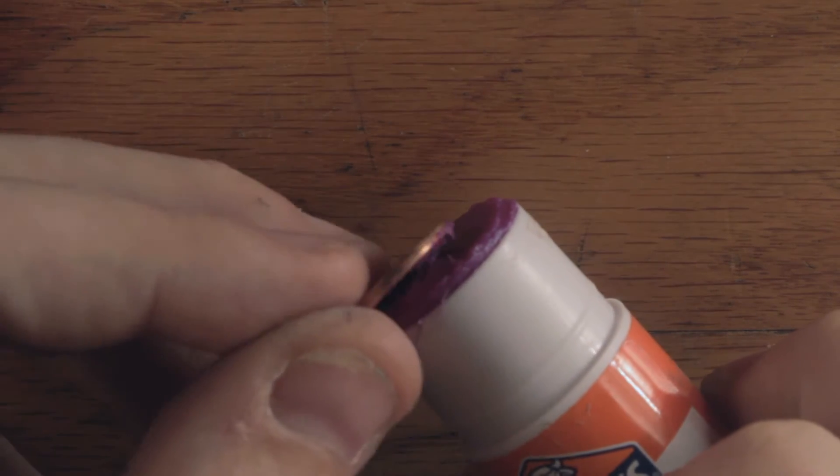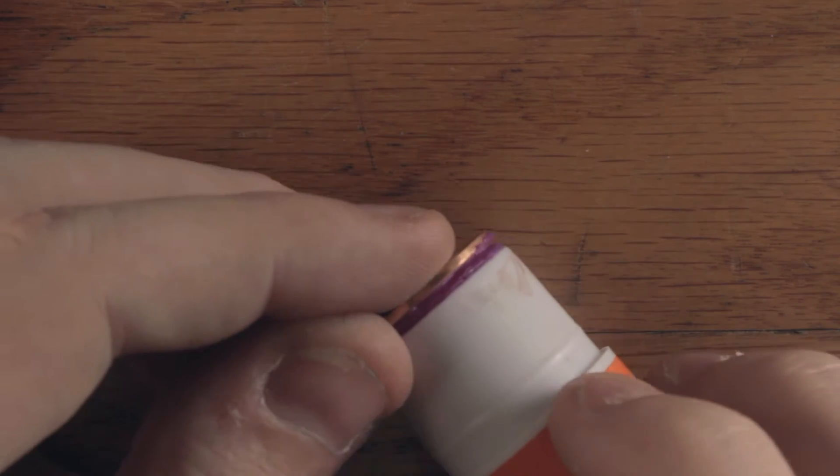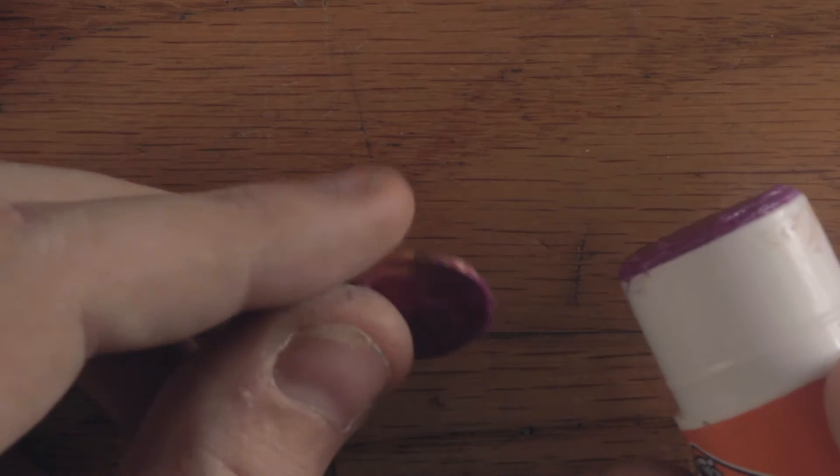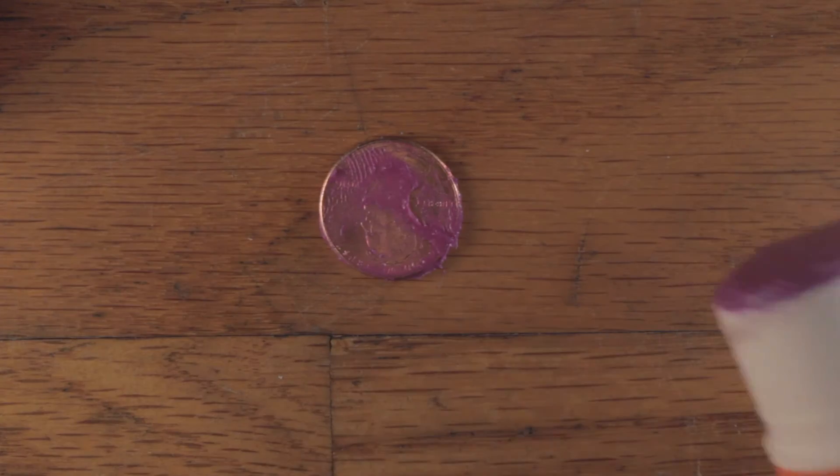You really want to get a lot more glue than you'd normally put on stuff, because if you peel it up a little bit, you can see how it forms little strings. So that's what we're going to be doing in a second, but we've got to get the glue on there first.